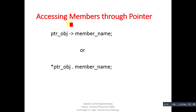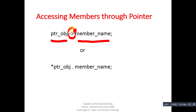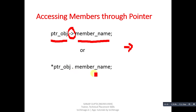When accessing members through a pointer, you use the arrow sign, also known as the member selection operator. You form it by pressing the hyphen key and then the greater-than sign. Alternatively, you can use an asterisk, then the pointer to object, and then a dot followed by the member name. You can choose whichever option is convenient for you.